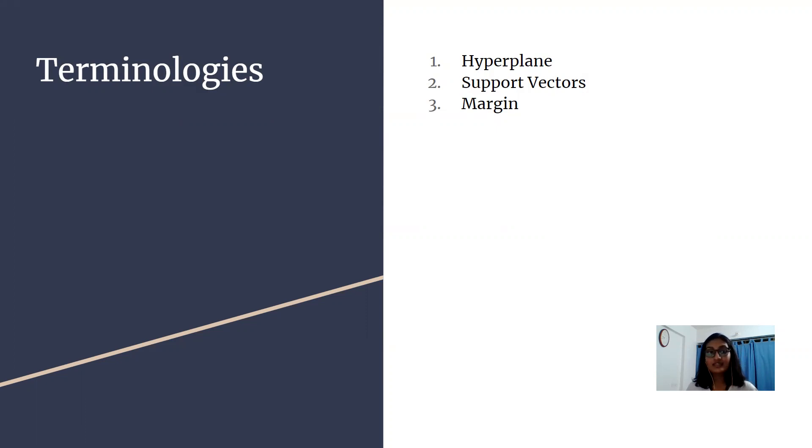The next terminology is support vectors. Support vectors are the sample data points which are closest to the hyperplane. These data points will define the separating line or hyperplane better by calculating margins.